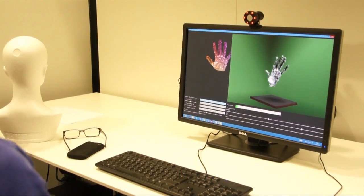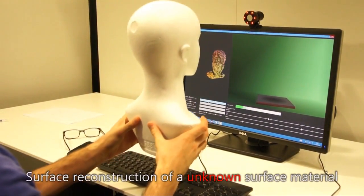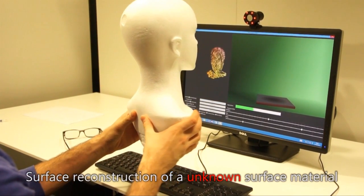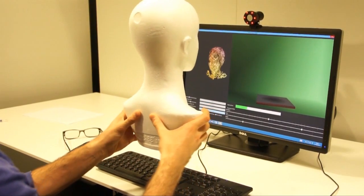In this final example, we demonstrate the main limitation of our system. Because we train for a specific surface albedo, in this case skin, surfaces with other reflectance properties will cause errors in the depth estimation algorithm.